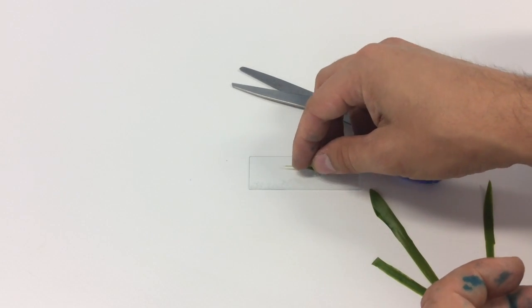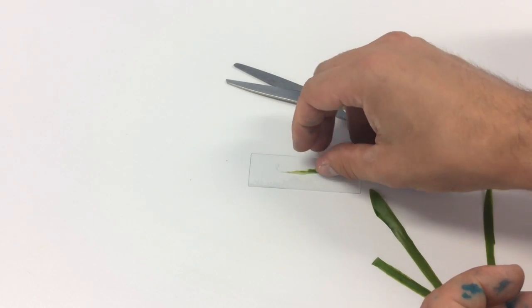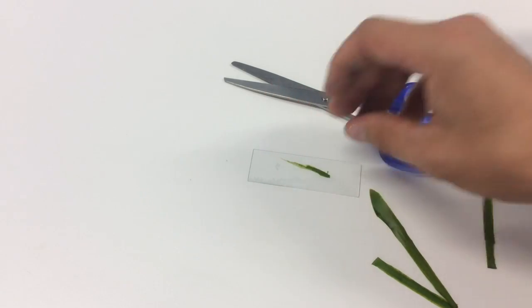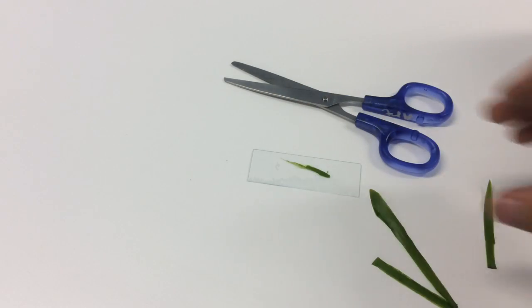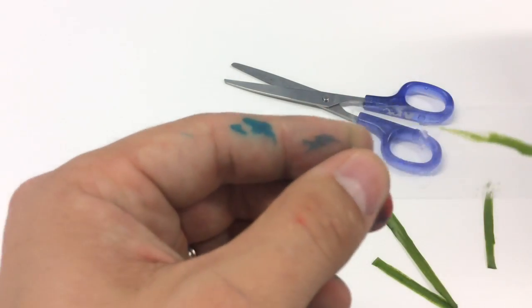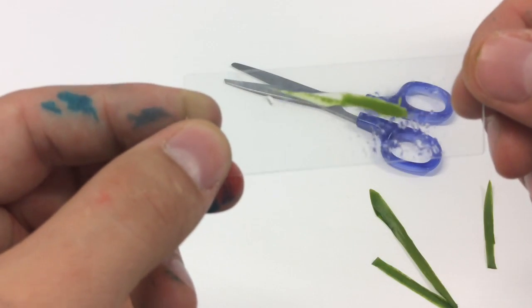And press it down to make sure that it is actually on the slide. You don't want a thick piece of this because you're trying to pass light through it so that you can view it under the microscope.